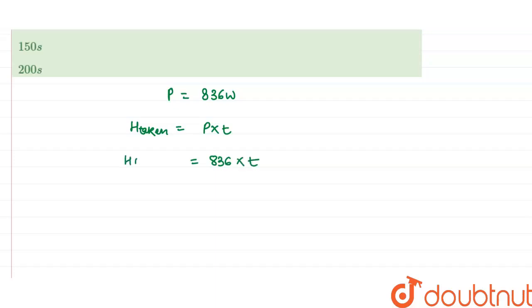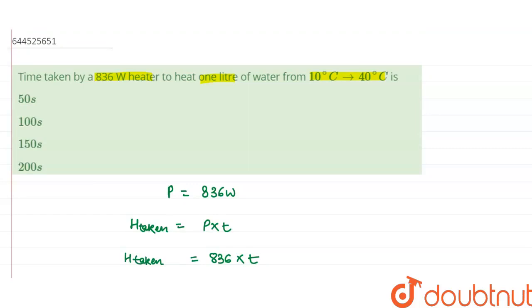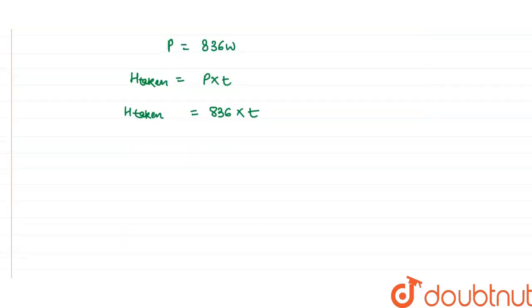Now water uses the same amount of heat to change its temperature from 10 degree centigrade to 40 degree centigrade, so I can write that heat used by water, that is delta Q. Delta Q is the heat used by water to change its temperature and that equals m s delta t.